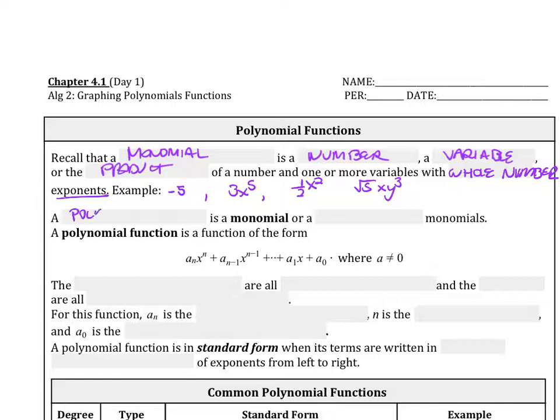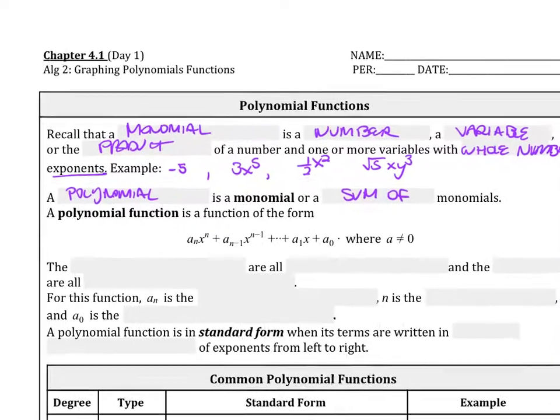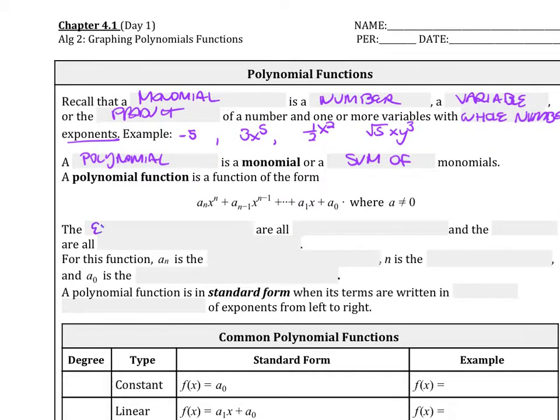A polynomial is a monomial or a sum of monomials. So a polynomial function is a function of this form, so I know that looks kind of crazy, but we'll define it in just a little bit.